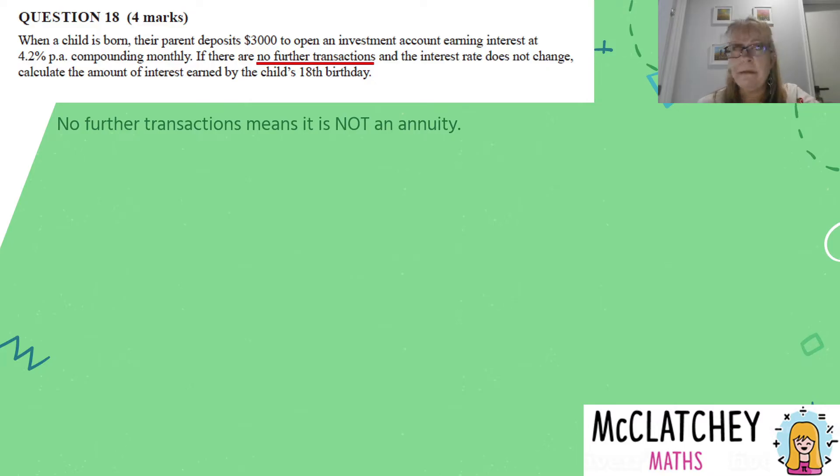Here's our first set of clues. No further transactions means we're putting in $3,000 one time and leaving it there for 18 years. Because there's no additional payments going into that particular investment, it's not an annuity. So we can rule out all of the annuity formulas. It's just a straight up compound interest question. It says compounding, so we need to use the compound interest formula, which is A equals P brackets one plus i to the power of n.